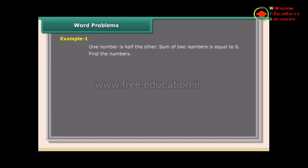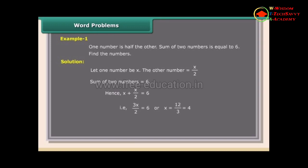Word problem example 1: One number is half the other. The sum of the two numbers is 6. Find the numbers. Solution: Let one number be X; the other is X/2. X + X/2 = 6, so 3X/2 = 6, giving X = 4. The numbers are 4 and 2. Check: 4 + 2 = 6. The answer is correct.